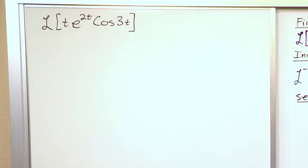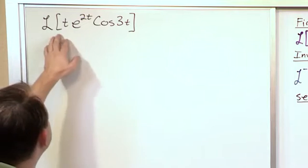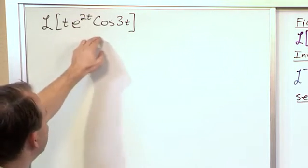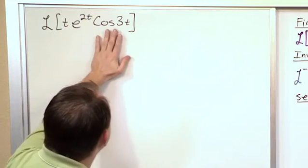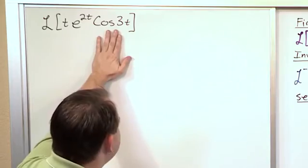Now this is a different kind of problem. It looks quite complicated because we have lots of things in here, three different terms multiplied together. So you stare at this for a while, but then you realize, well, I do know how to take the Laplace Transform of the cosine. That's something I know.